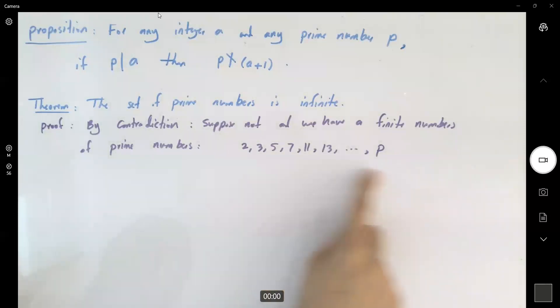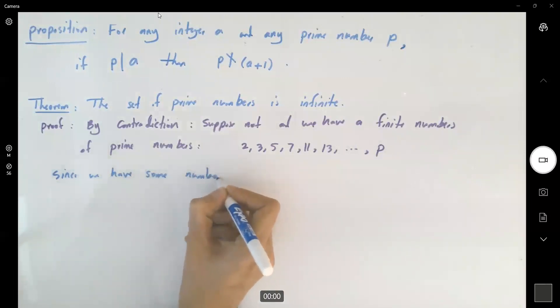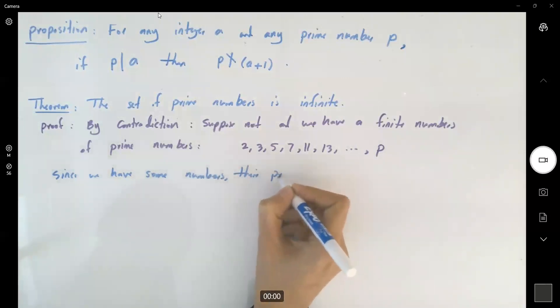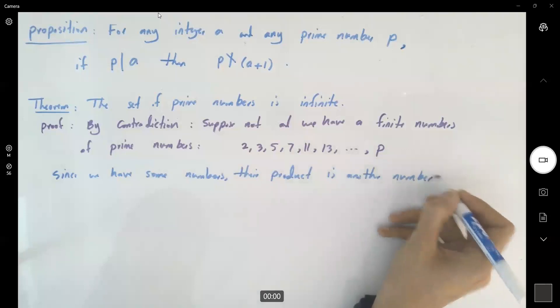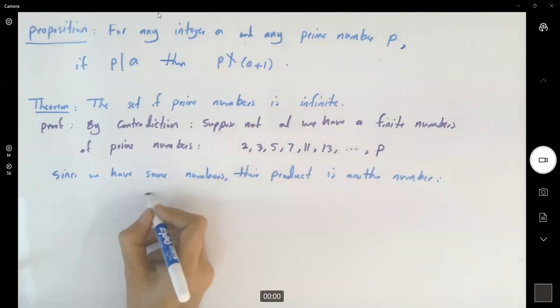So since you have some numbers, the multiplication is another number. I'm gonna write from algebra. Since we have some numbers, their product or multiplication is another number.